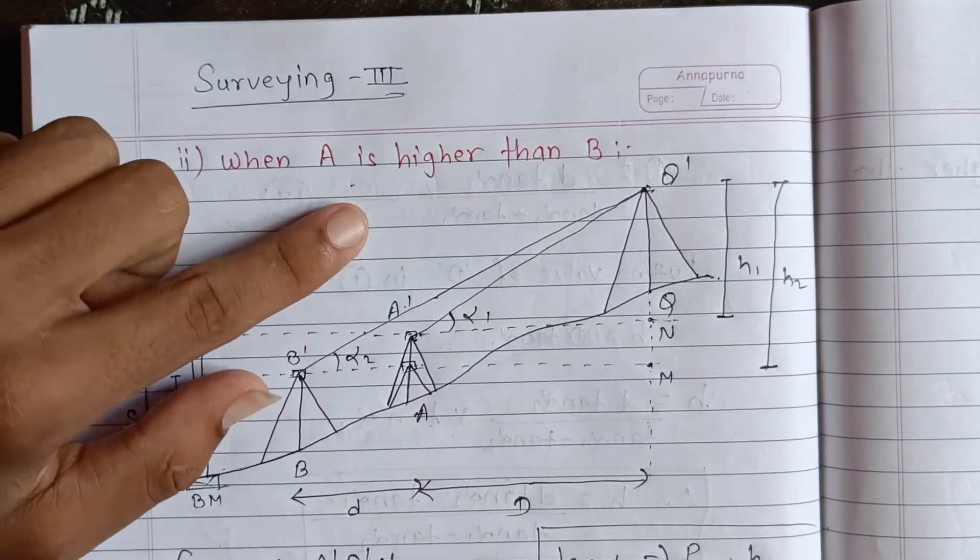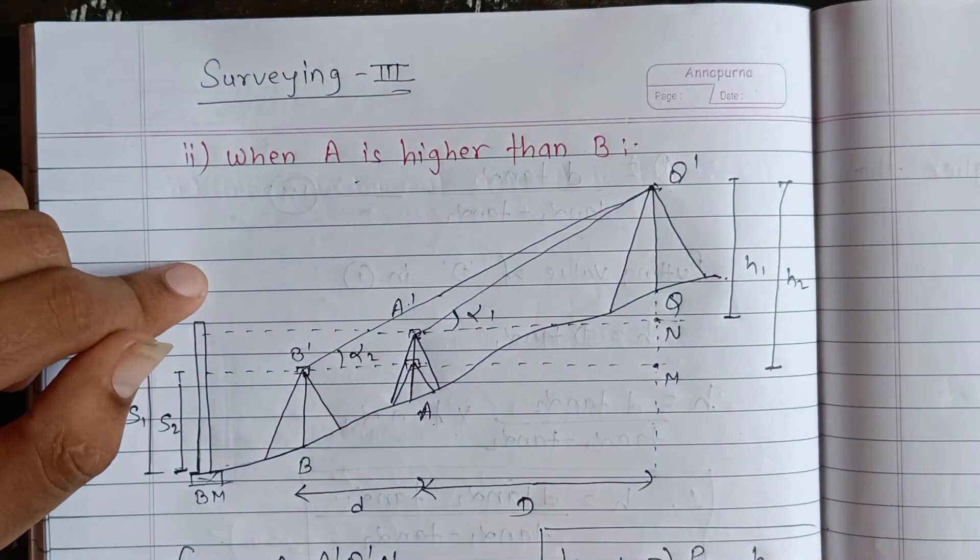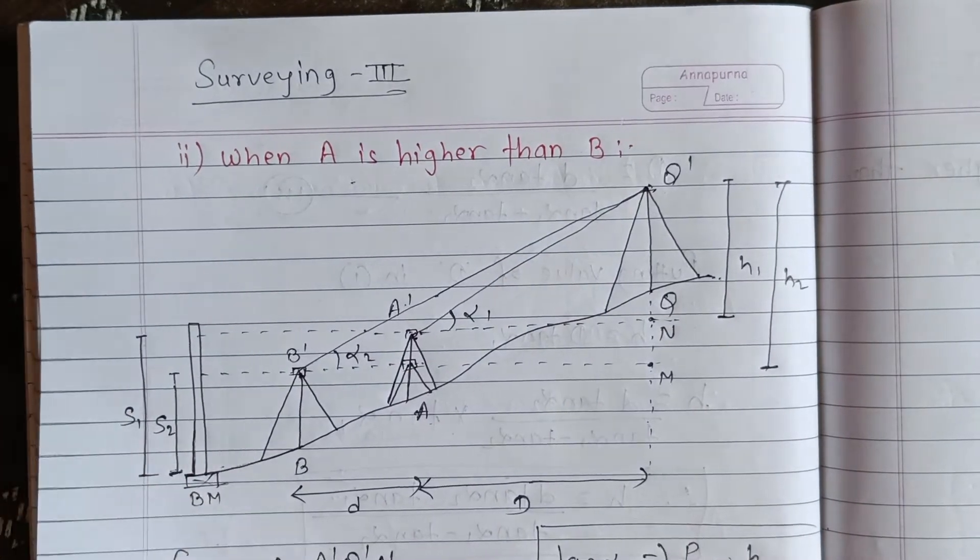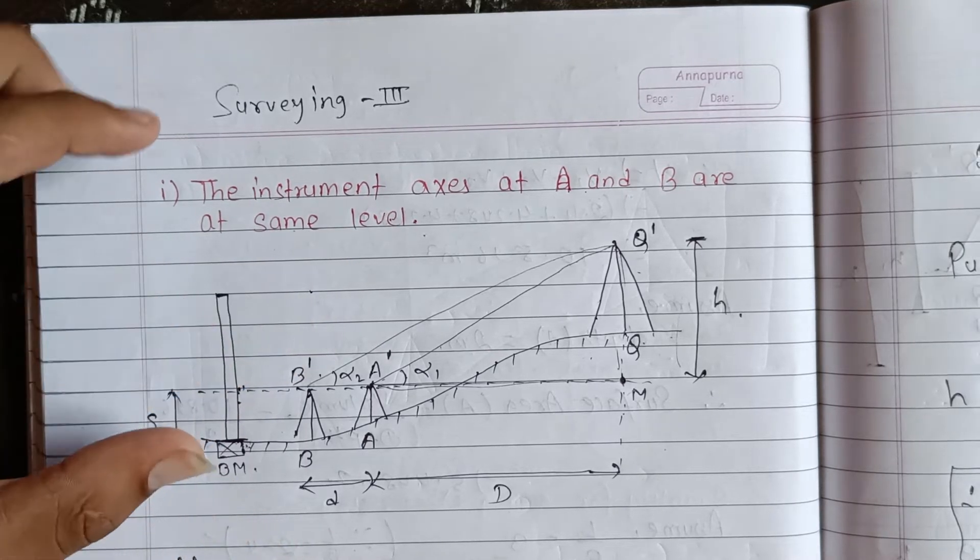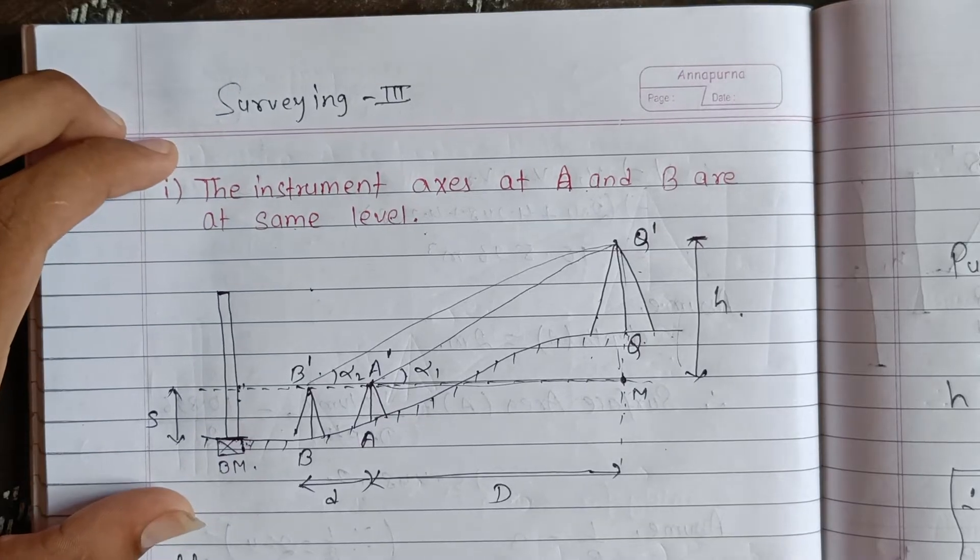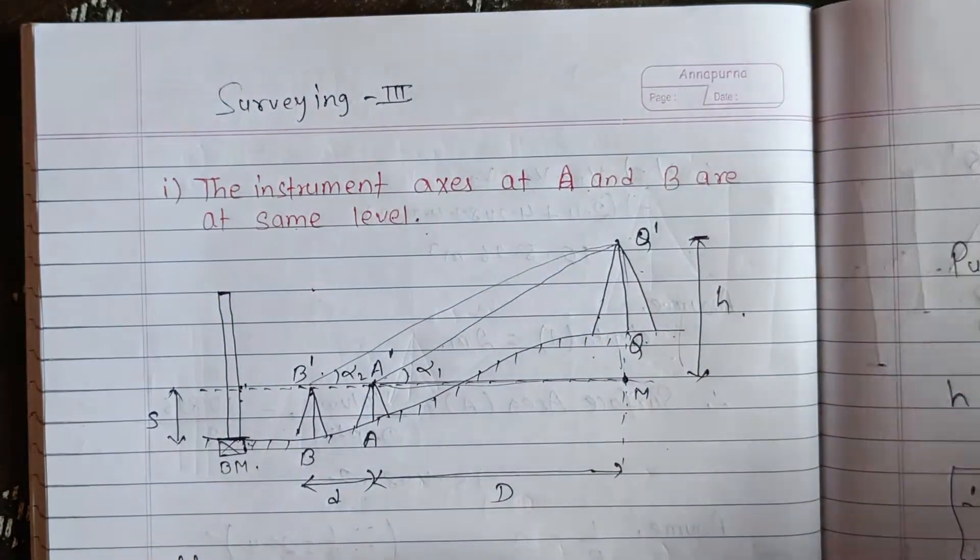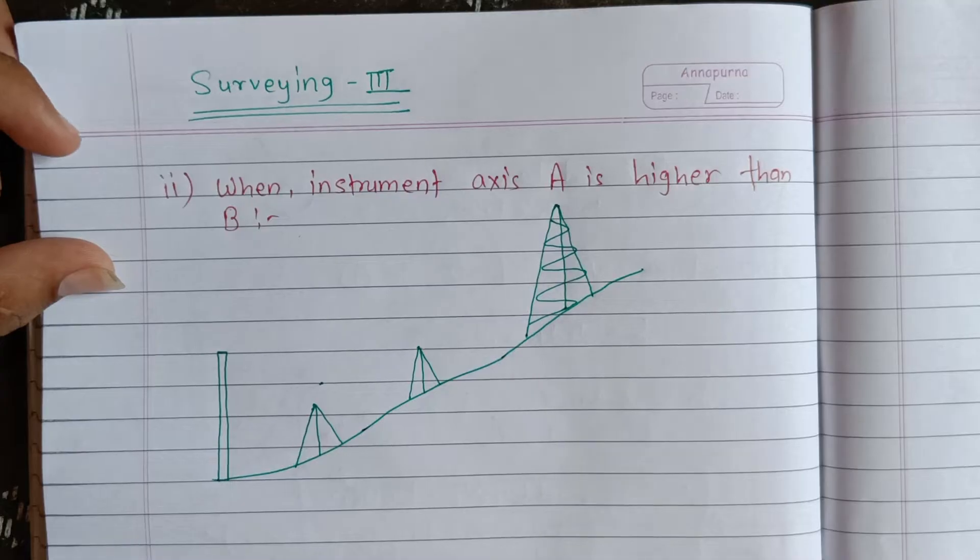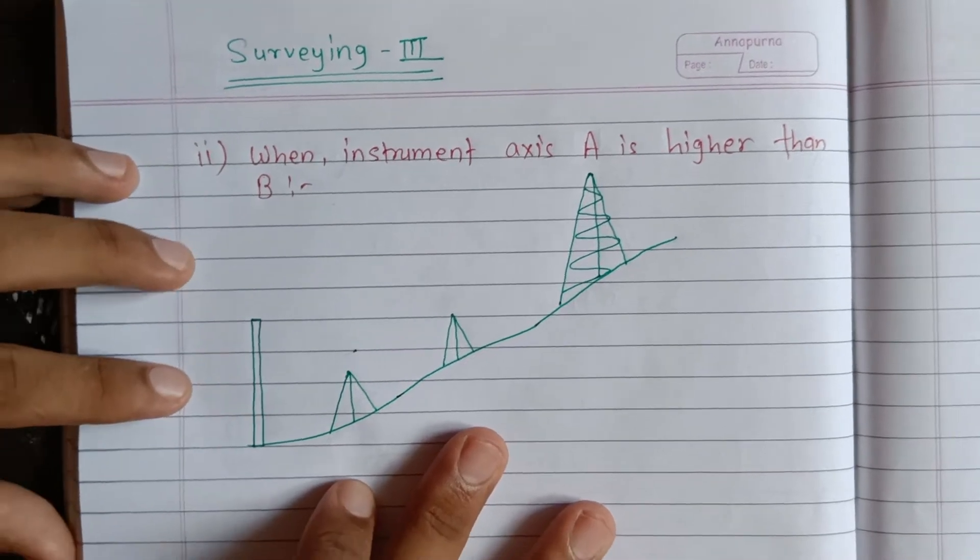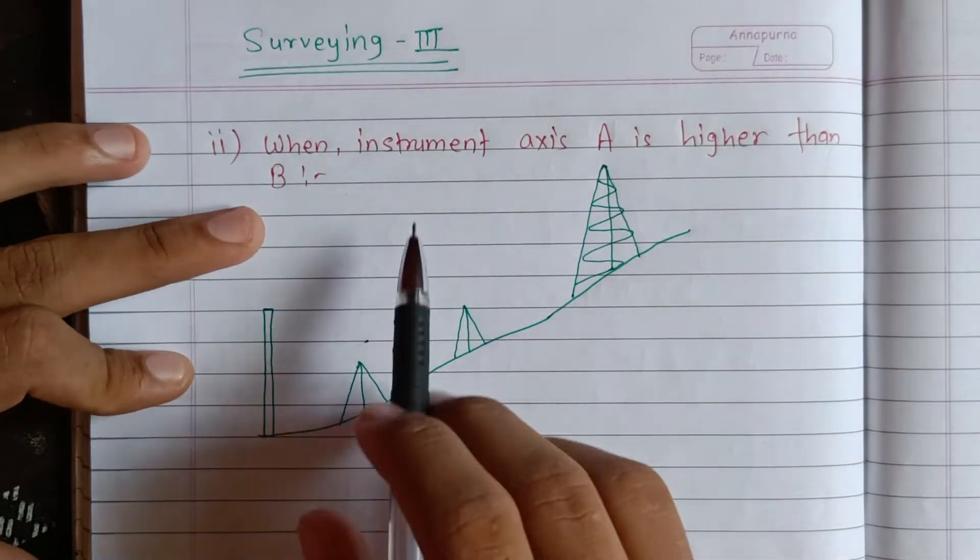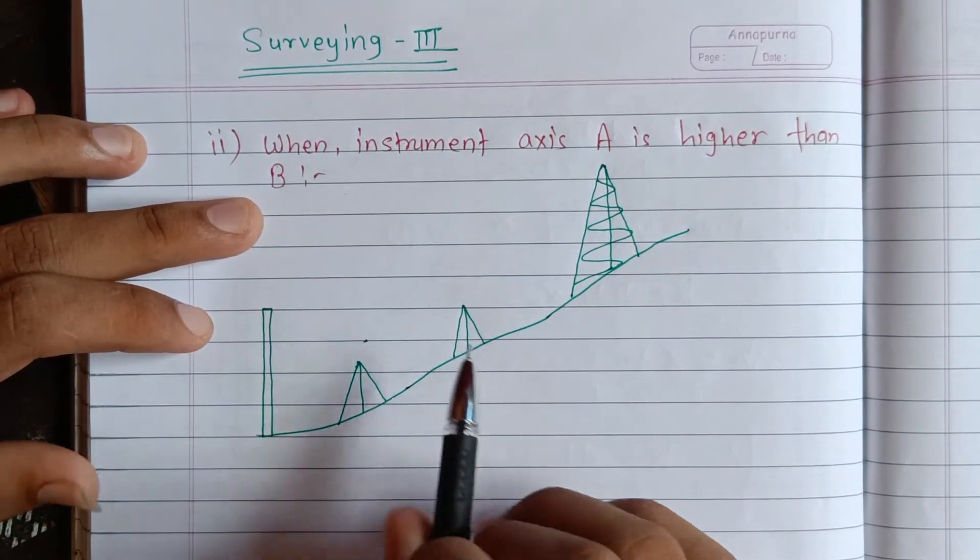When instruments A and B are at the same level, this is our first case. The second case is when instrument A is higher than B. These are the two scenarios we'll examine in this surveying lesson.